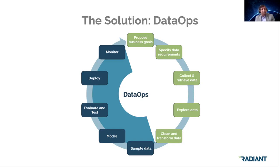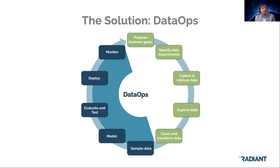On the engineering side, with sample data available, you model the data — for a data warehouse, big data, or data science machine learning models. You perform evaluation and testing, then deploy. After deployment, you constantly monitor to ensure quality is measured and validated at every point, and data passes through the pipeline without issues. Monitoring helps improve infrastructure, customize the pipeline, and identify bottlenecks or performance-related issues that may require infrastructure updates or open source tool adjustments.